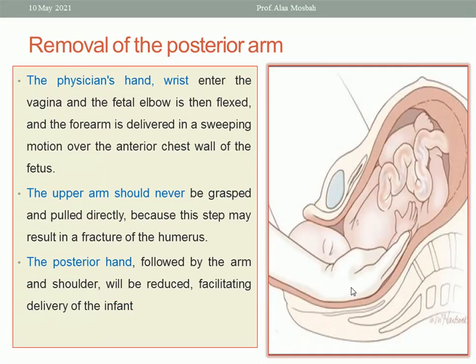If failed, go to the next step: remove or deliver the posterior arm. Insert the hand inside the vagina, try to reach the elbow, then flex the arm of the baby, hold the hand of the baby, then sweep the hand with the forearm out. Be careful not to apply traction on the upper arm so as not to cause a fracture of the humerus. The posterior hand, followed by the arm and shoulder, will be delivered, facilitating delivery of the infant.